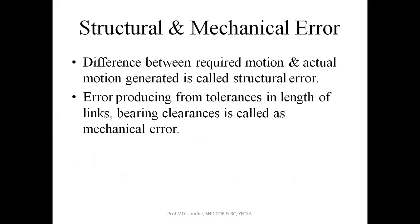Next is structural and mechanical error. Error is nothing but the difference between the actual value and the predicted value. In actual cases, the value will be less or more than the standard value. Structural error is defined as the difference between the required motion and the actual motion generated by any given mechanism. Mechanical error may be introduced due to some change in length, clearances, or any other parameters changing relative to the mechanism.